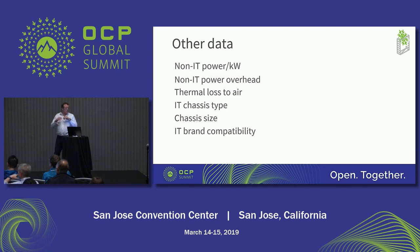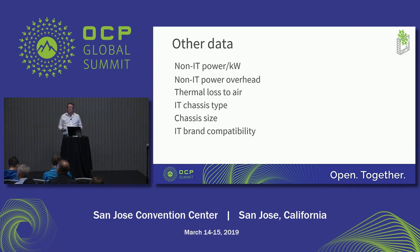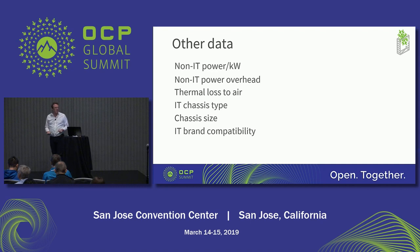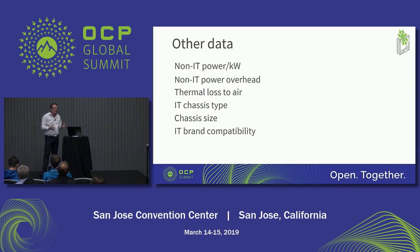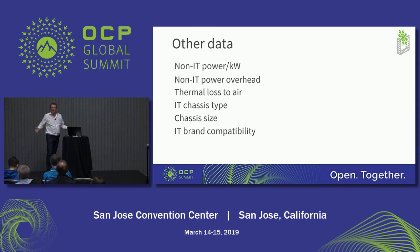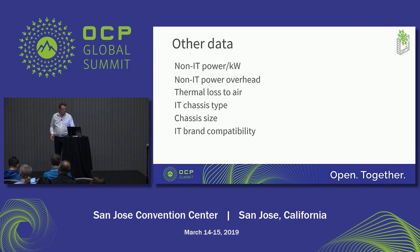There's a lot of other data we want manufacturers and vendors to make available to the market — all related to efficiency figures, things that you might not be considering yet simply because it's still a very new technology. For example, there is such a thing as thermal losses to air. If a system is losing 10 or 15% of thermal energy to the air environment, you're still going to need CRAC units to cool down that thermal loss. These figures are becoming relevant. Chassis type, chassis size, and compatibility of brands are all going to factor in.